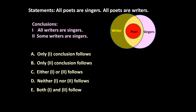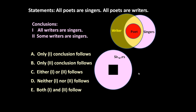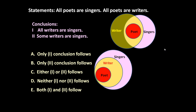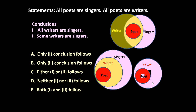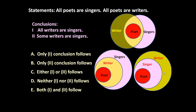These two statements can also be represented in a different manner: all poets are singers and all poets are writers. There may be one more method to represent these two diagrams as well — all poets are singers, all poets are writers. So in these three ways it can be represented.